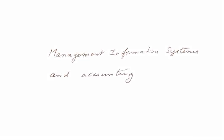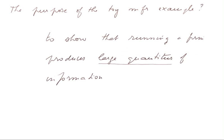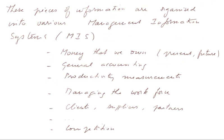Management Information Systems and Accounting. The purpose of the toy manufacturer example was to show that running a firm produces large quantities of information. These pieces of information are organized into various management information systems, abbreviated MIS. They are elaborate databases.